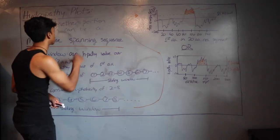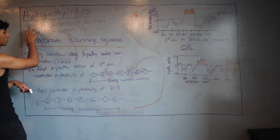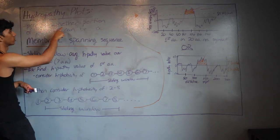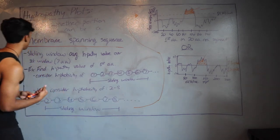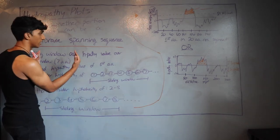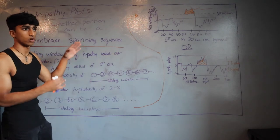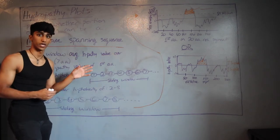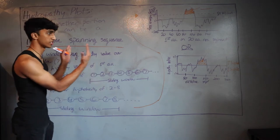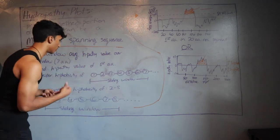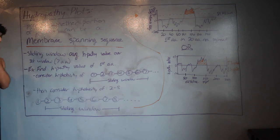Hydropathy plots are used to predict whether a portion of a protein can be a membrane-spanning sequence. They use a sliding window approach. For a protein portion to cross the membrane, all its residues must be hydrophobic and non-polar. The sliding window gives the average hydropathy value over a set number of amino acid residues — for example, seven amino acids in class.